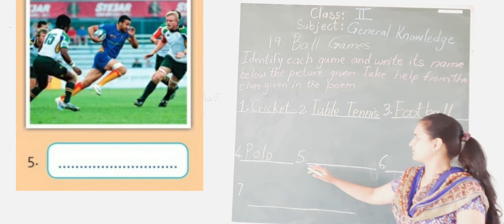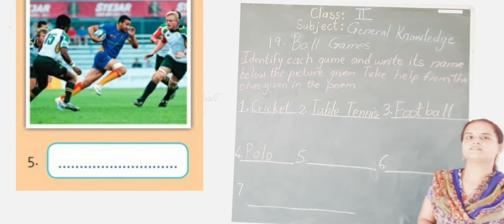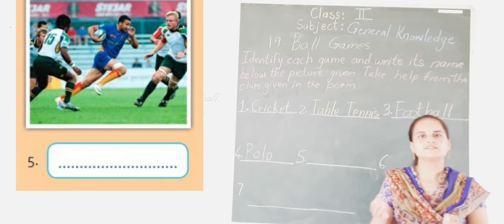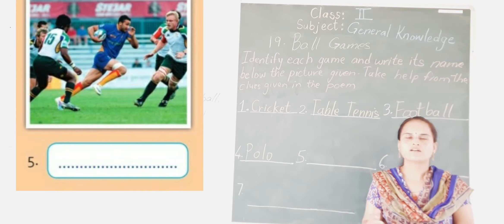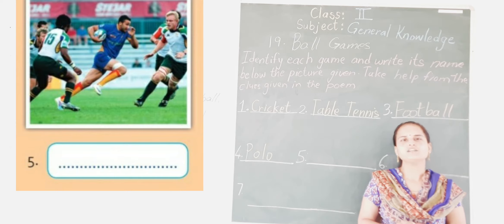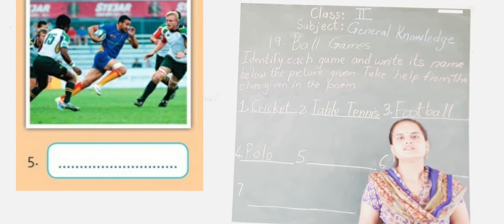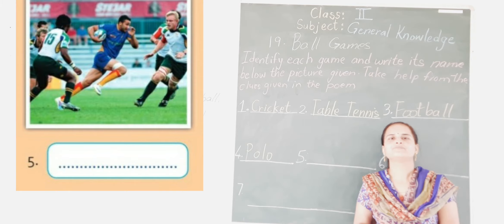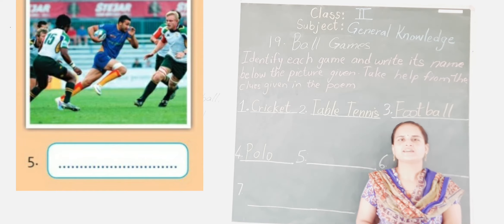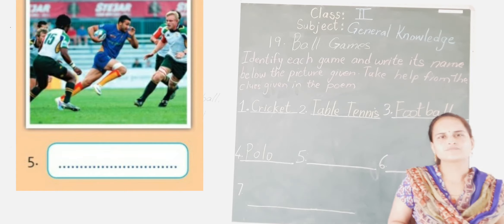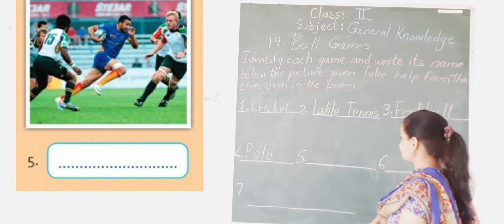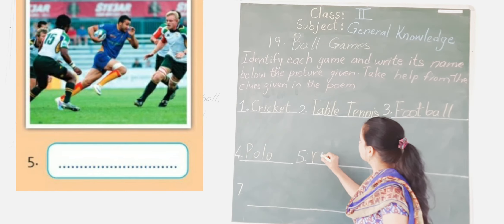Now the fifth one — which picture is it? It looks somewhat like football, but the game's name is rugby. It uses an oval shaped ball, in which they have to use their hands to play. They have similar rules to football but some changes are there. So the fifth game is rugby.